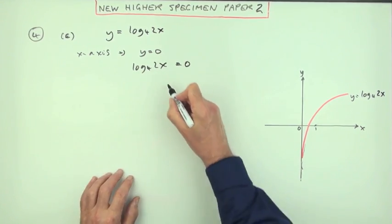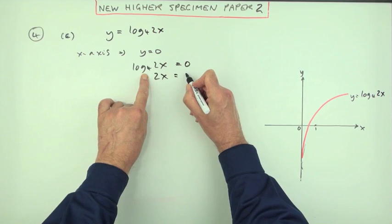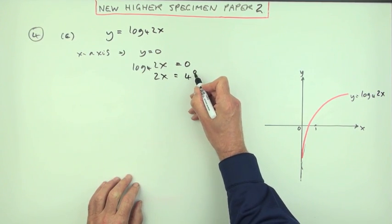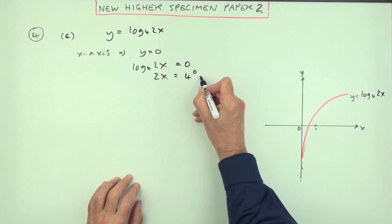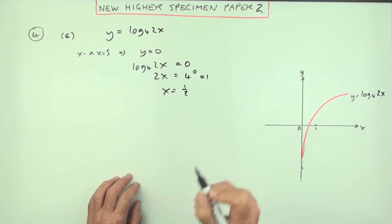If log 4 of 2x is 0, solve the equation for x. First remove that function: log base 4 inverse, 4 to the power. 4 to the power 0 is 1, so x will be 1 divided by the 2. X is a half.